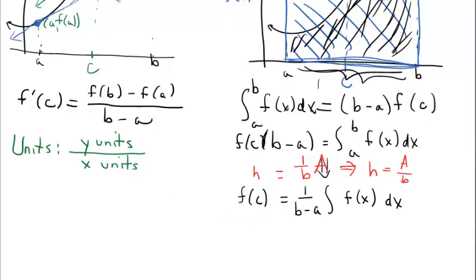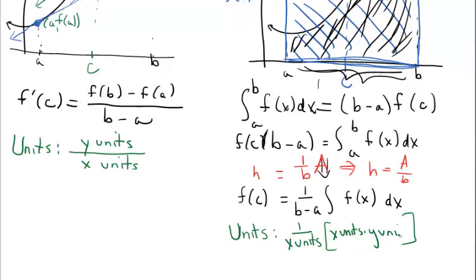Let's look at the units through the formula. This is 1 over b minus a, which are x units. Looking at the integral: when we find the area under a curve, we're multiplying x units times y units to get that area. So the integral contributes x units times y units. Performing the calculations on the units, the x units cancel, resulting in just y units. So if you're answering an average value question and they say indicate units of measure, it's the y units they give you for the function — just tack those on to your answer.